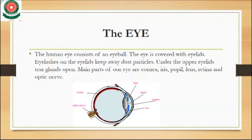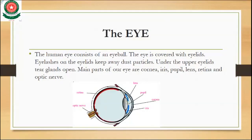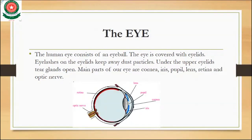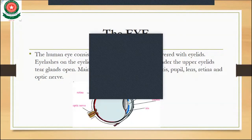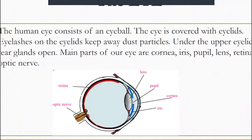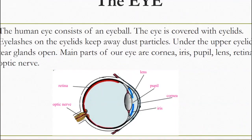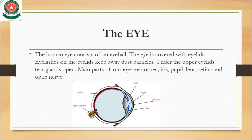Eyelashes can save our eye from dust particles. Under the upper eyelids, the tear glands open. The main parts of our eye are cornea, iris, pupil, lens, and retina. Now let's see the diagram of the eye. There is the lens, the pupil, the cornea on the front, the iris, the optic nerve connecting the eye with the brain, and the retina.